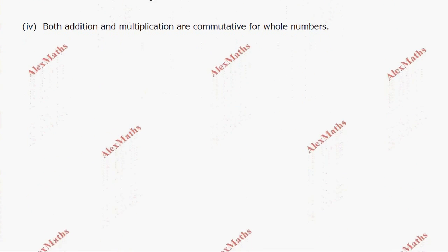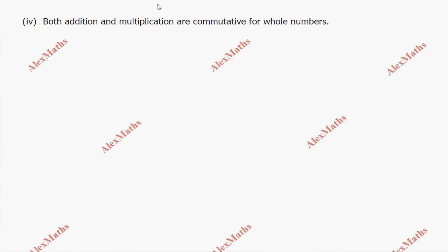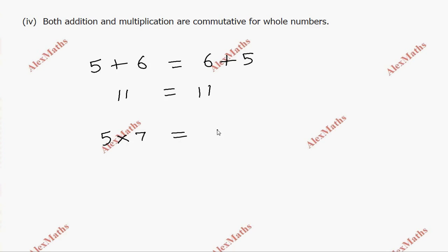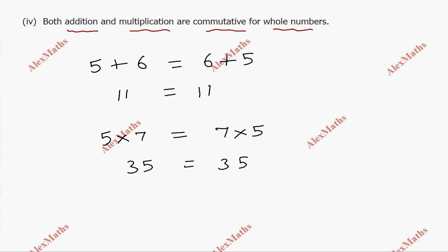Subdivision 4: addition and multiplication are commutative for whole numbers. For addition: 5 plus 6 equals 11, and 6 plus 5 equals 11 — commutative true. For multiplication: 5 into 7 equals 35, and 7 into 5 equals 35 — same result. Both addition and multiplication are commutative for whole numbers. The statement is true.